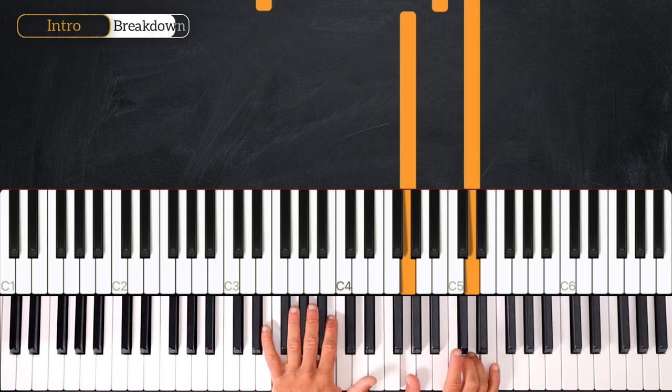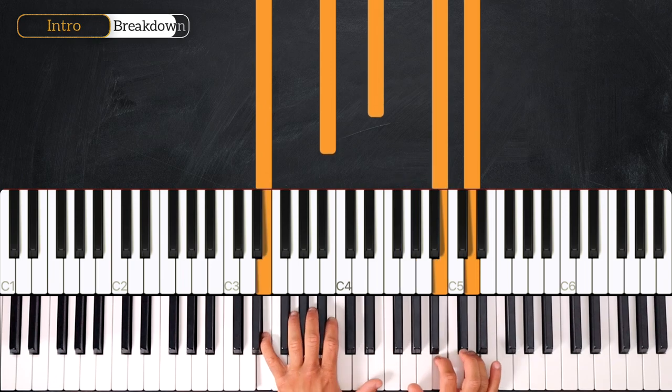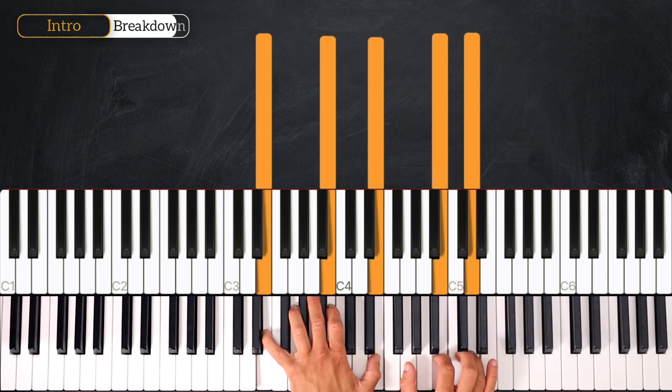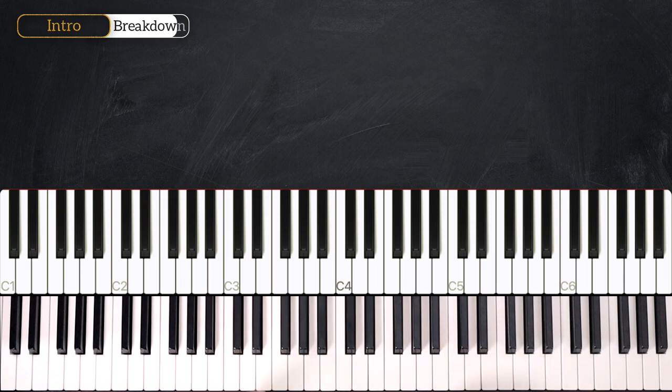And then we play the B alone. And on the left hand, we highlight the E minor 7 chord. Very good! Okay, so let's play it from the very beginning slowly.